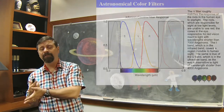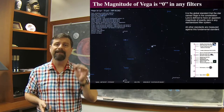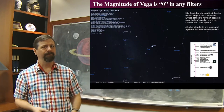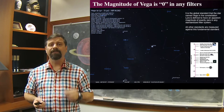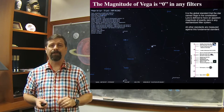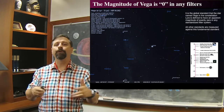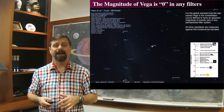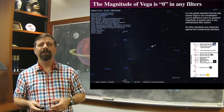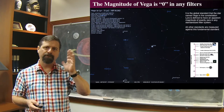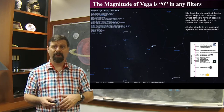Just as we defined with Pogson's system last time, in any filter system — including Johnson-Cousins — the definition of zero magnitude is the star Vega. So we start with that idea and say, how bright or dim is the object with respect to Vega? We use Vega because it passes across the zenith for many observers in the Northern Hemisphere.